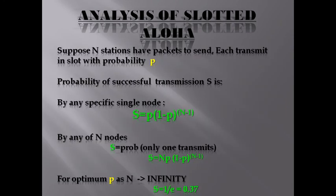Analysis of Slotted ALOHA: suppose N stations have packets to send; each transmits in a slot with probability p. The probability of successful transmission by any specific single node is S = p × (1−p)^(N−1). By any of the N nodes, S = N × p × (1−p)^(N−1). For the optimum p, as N tends to infinity, S equals 1/e, that is approximately 0.37.